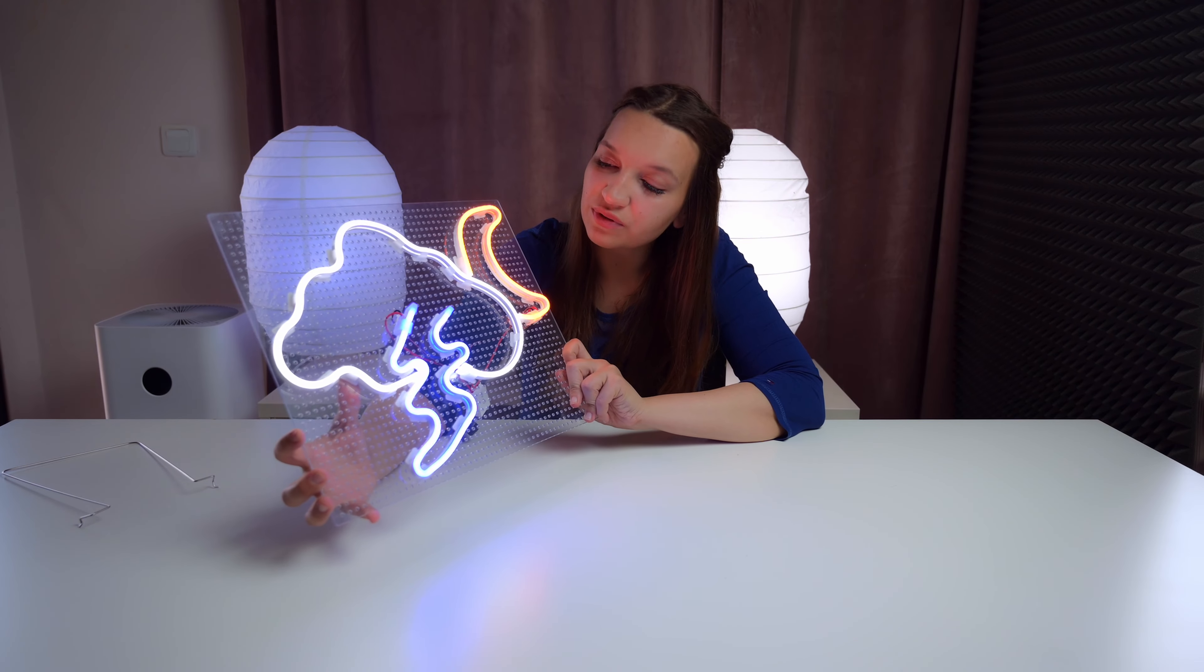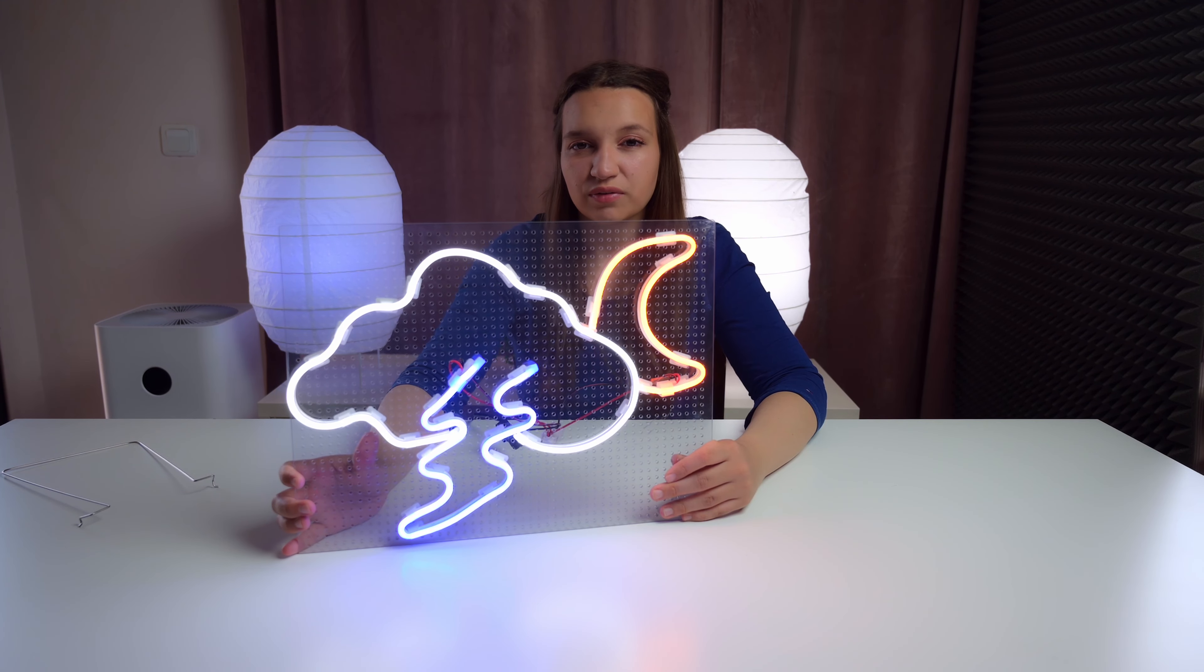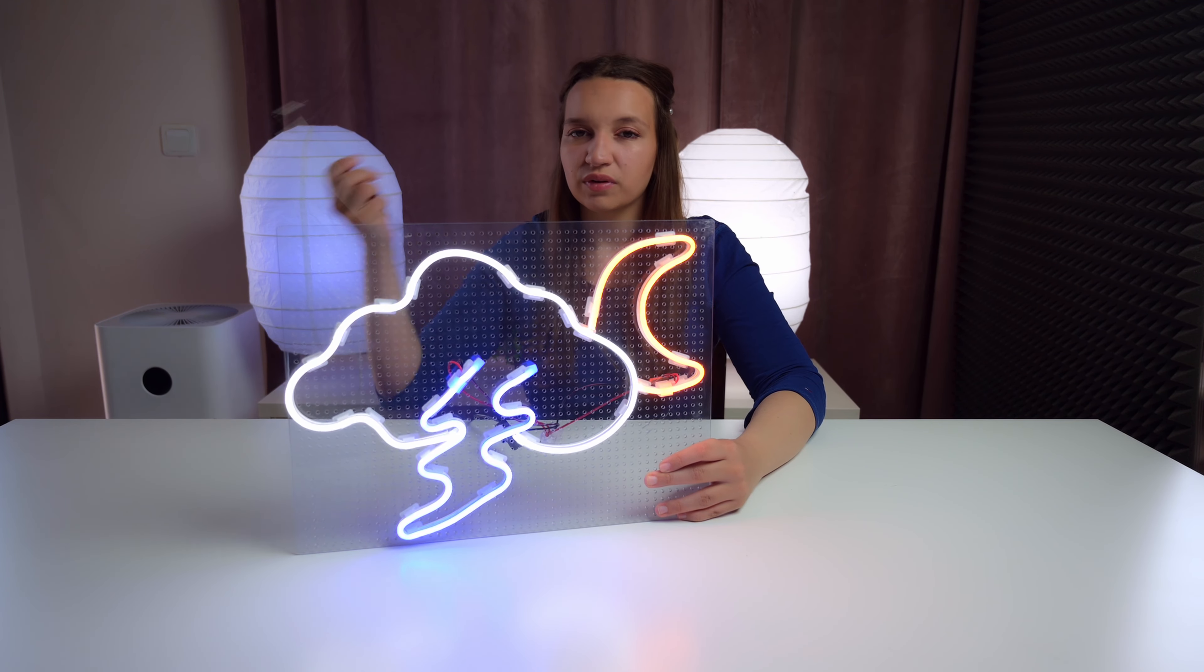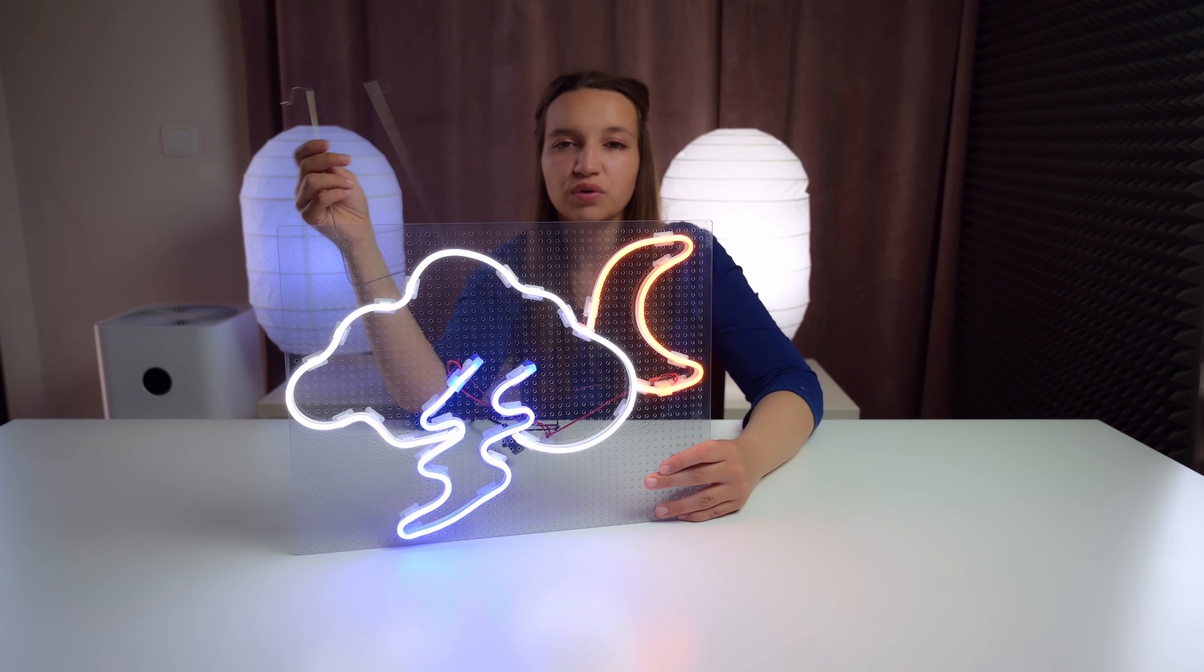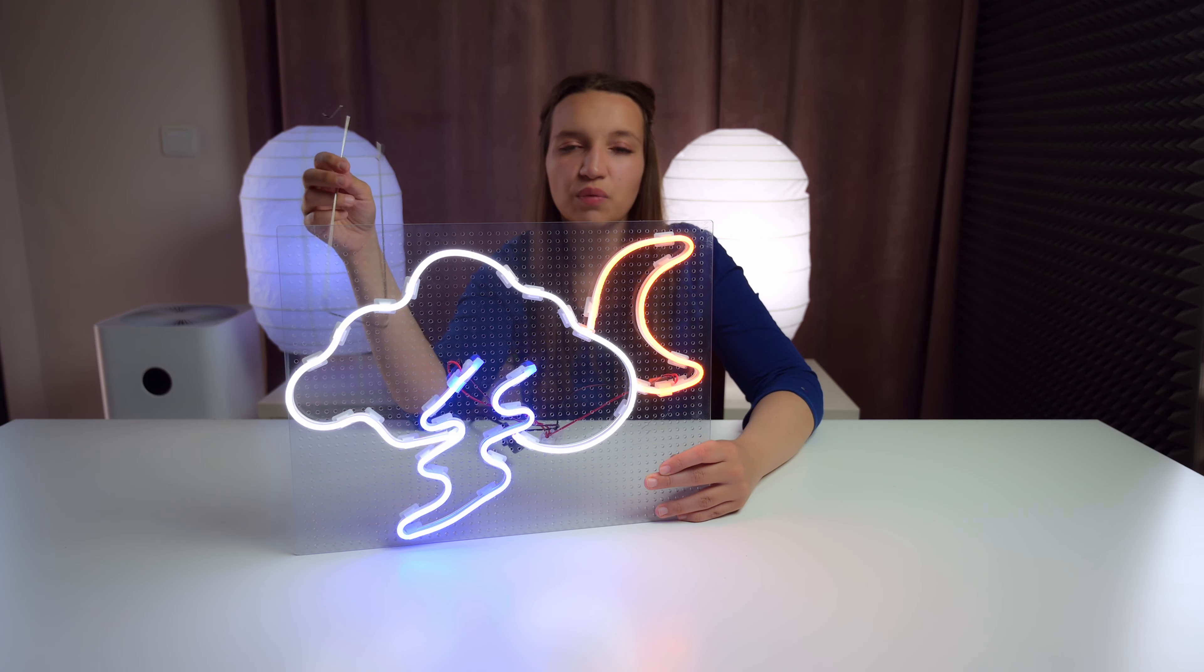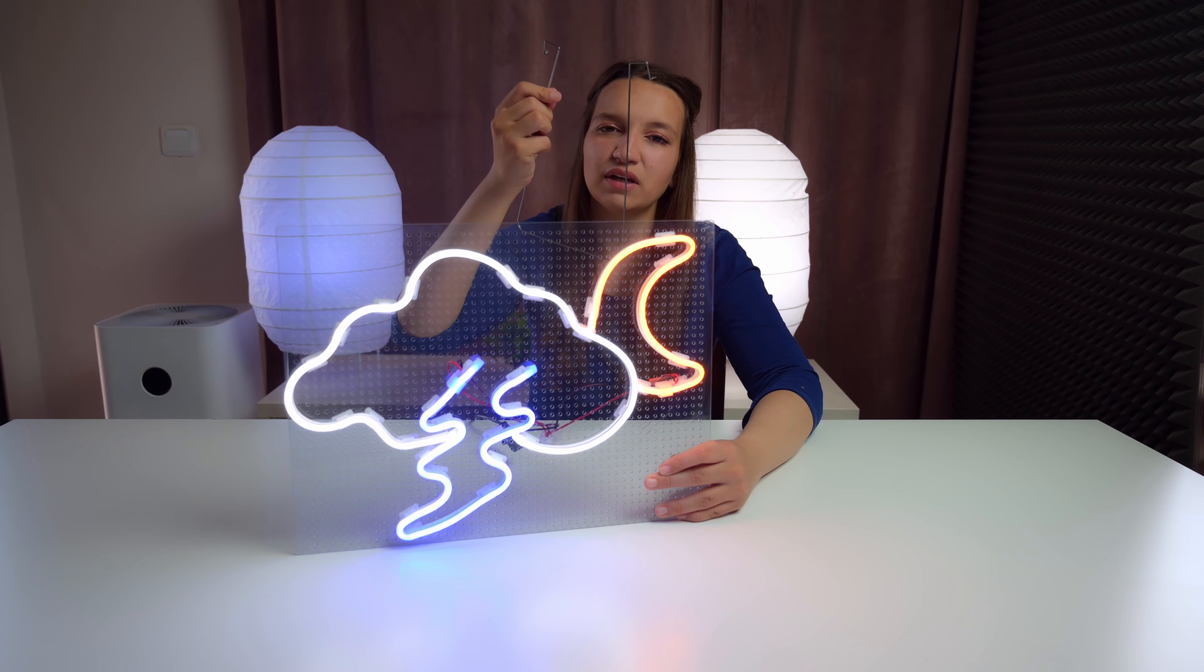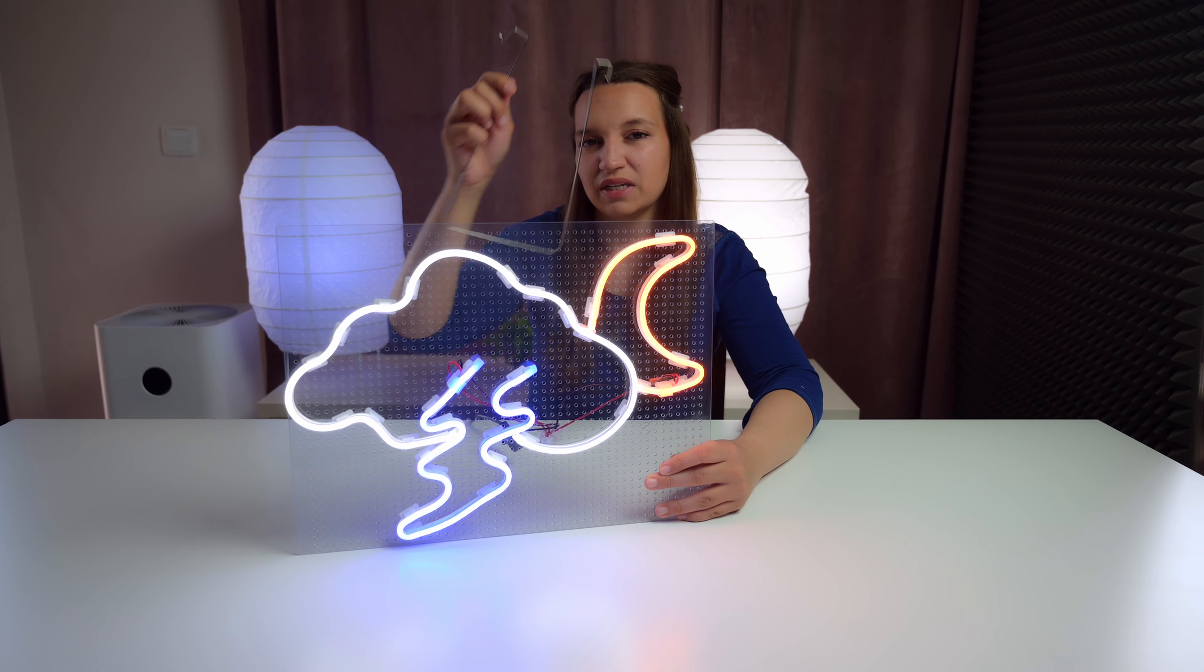Ta-da! It looks nice, isn't it? Now, in the fifth step, we're gonna install the special stand. With this stand, you can put your beautiful neon light sign on a desktop or behind a window or a wall. It's specially made to support each one of these places.